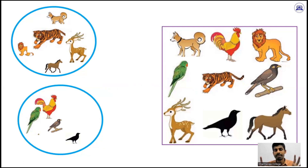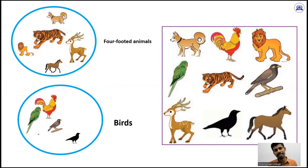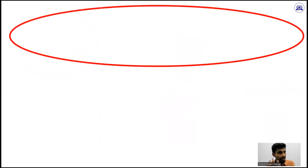You need to identify the common characteristics and you can separate into groups and also give names to those groups. The group of four-footed animals and the group of birds. It is a very easy and interesting lesson. Shall I move to the next one? I am just moving to my second example.